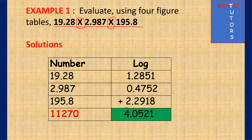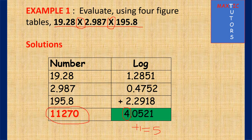Now you add 1 to the characteristic 4, giving you 5. So that means we are going to have 5 digits in the answer. Check the antilog table: 05 under 2, difference 1, when you add them together gives 1127. But 1127 is only 4 digits and you need 5, so you add a zero to make it 11270. That means your final answer has 5 digits.